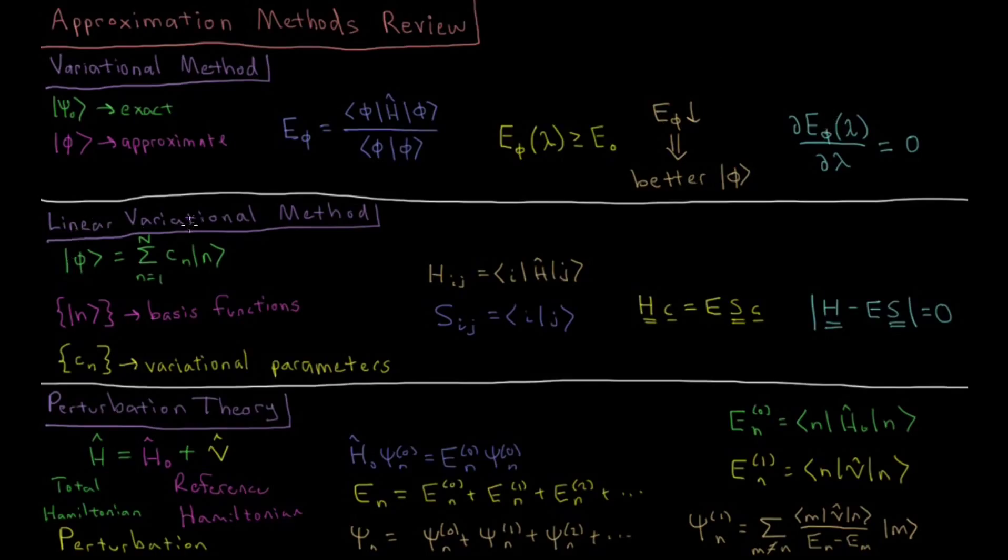Additionally, we have the linear variational method where our variational parameters are coefficients in a linear combination of basis functions. So our wave function, our approximate wave function, is represented as a sum of a coefficient times some basis function and then summed over all of the basis functions that we have.